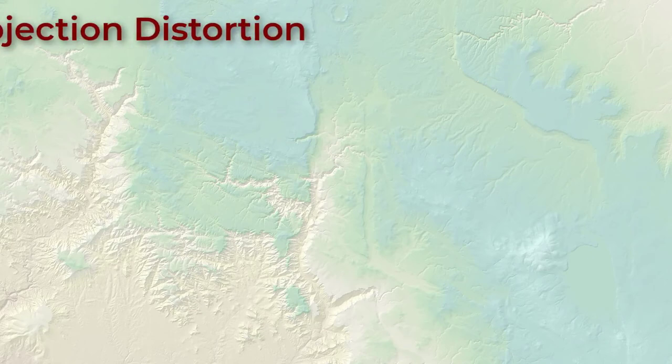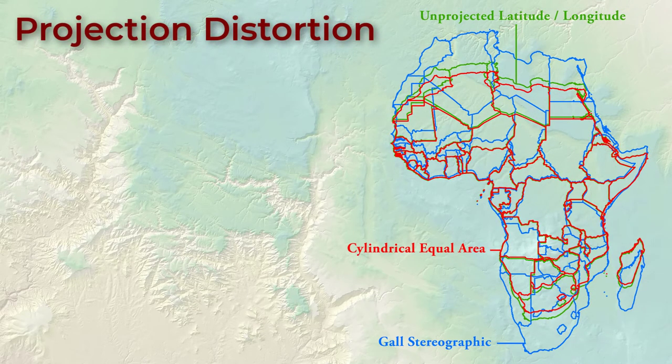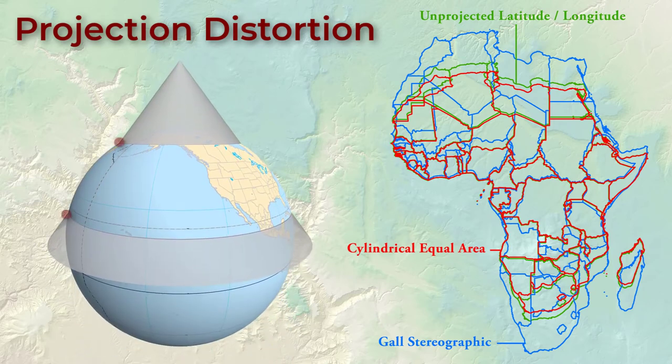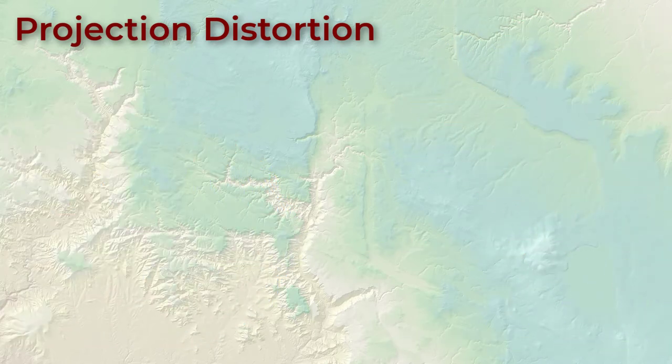Projection distortion is always minimized at or near the intersection of the projection surface and the planet. So if you have a cone sitting on the planet, distortion will be minimized where that cone actually touches the planet. Different projections cause different types of distortion, and we choose a projection based on what type of distortion we want to maximize accuracy in, and whether we want to make an aesthetically pleasing or convincing map. The four types of distortion we usually care about are shape, area, length, and direction.